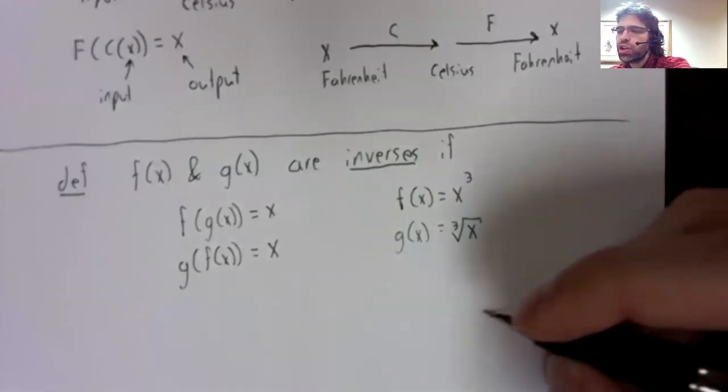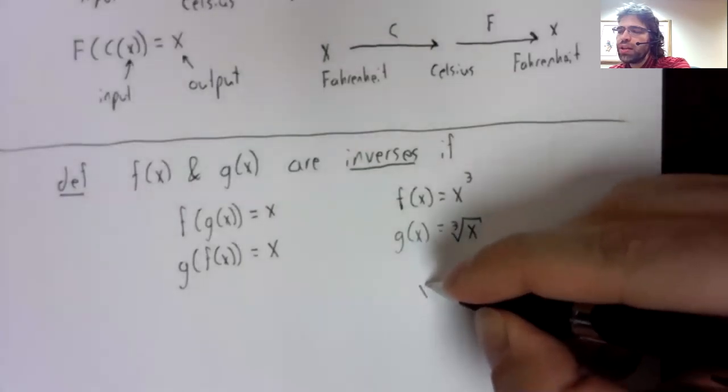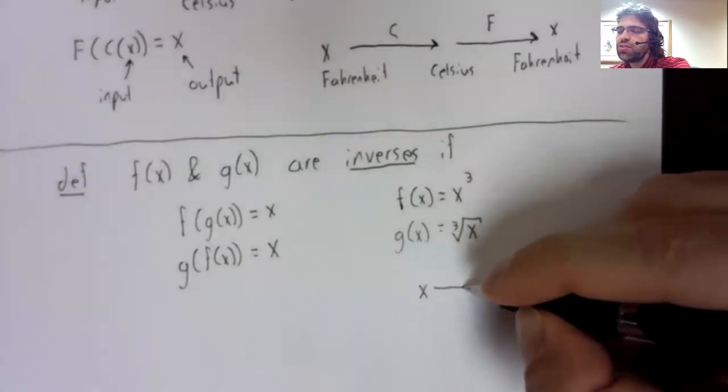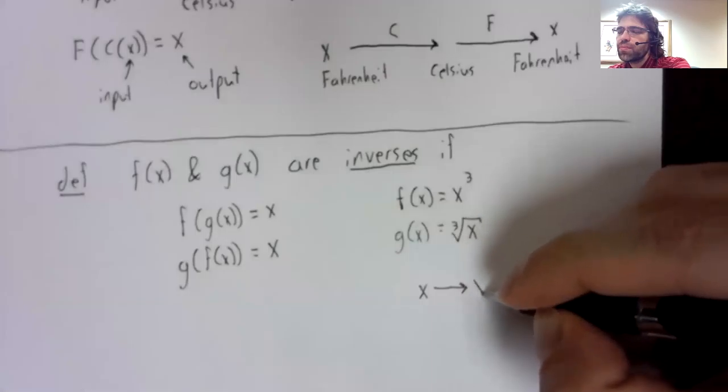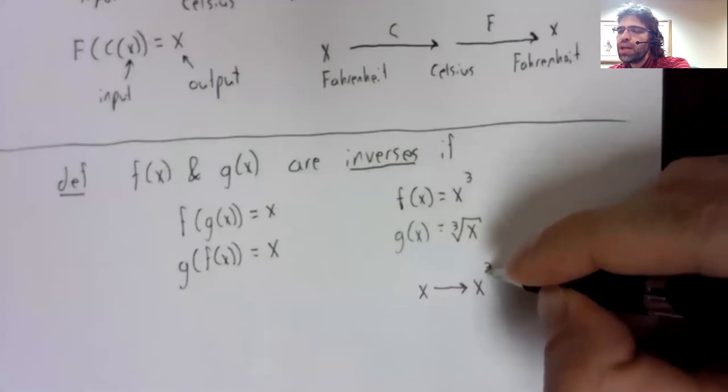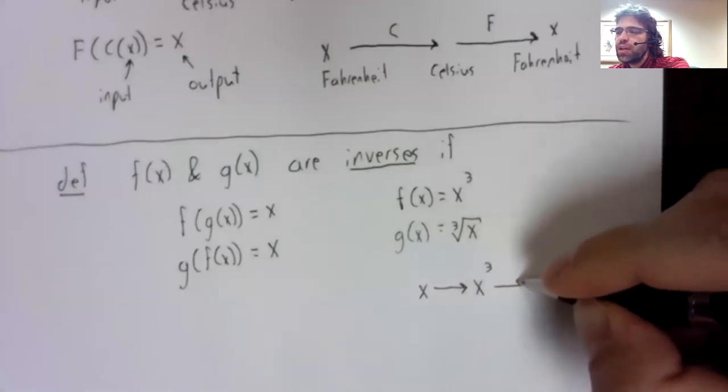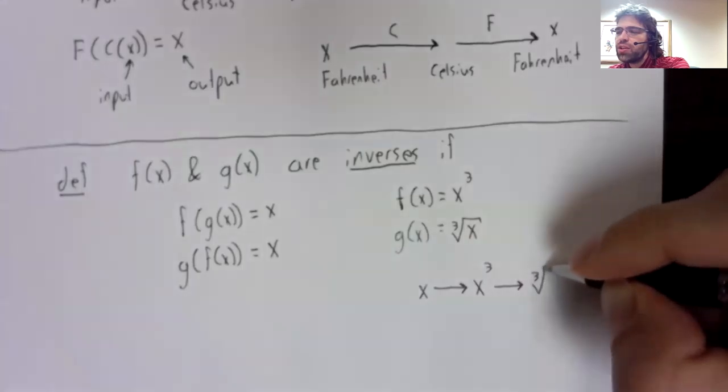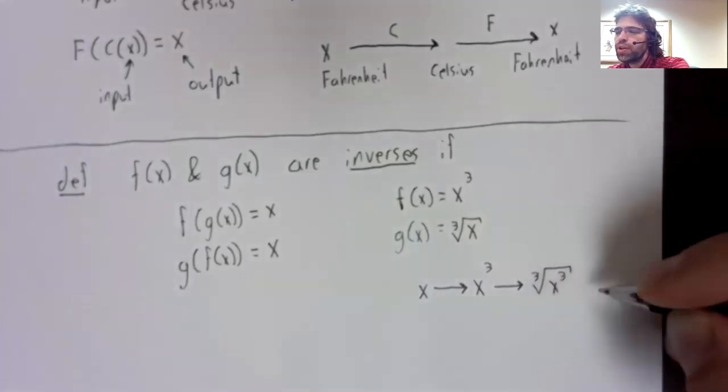A purely mathematical example would be f of x equals x cubed and g of x equals the cubed root of x.